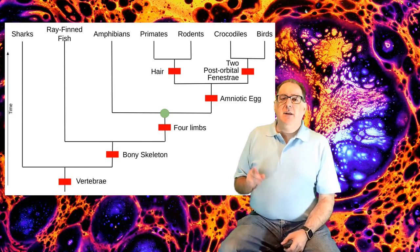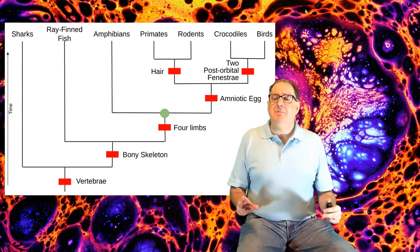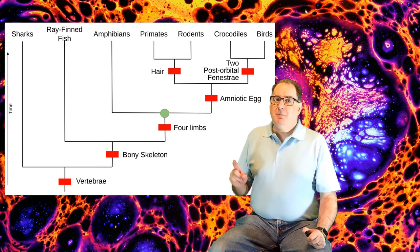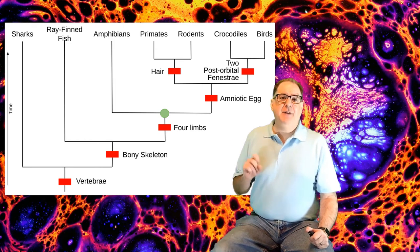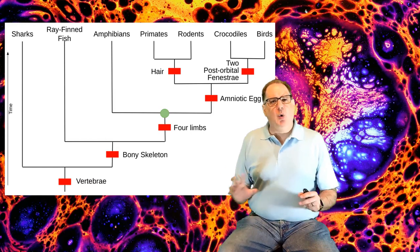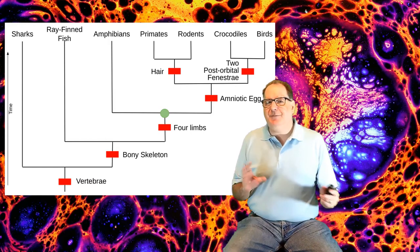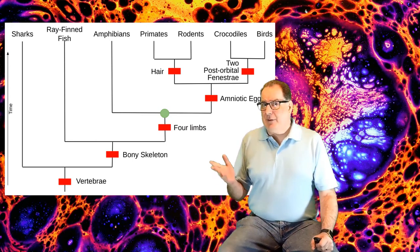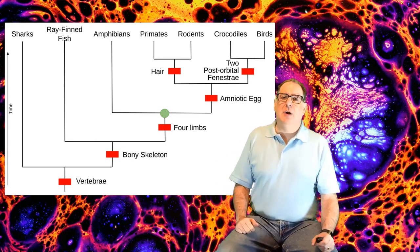Originally, these cladograms were made based on physical features that could be observed from fossils. But with DNA evidence available now, some older diagrams are being refined based on new information. Our family trees are getting more accurate.